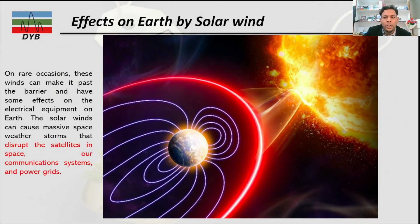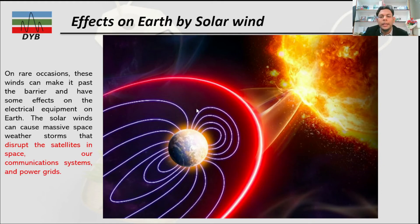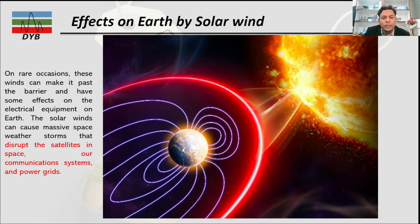Now let's look at the effect of solar wind on the Earth. The Earth also has a magnetic field, but it can be affected by the high-intensity magnetic field of the Sun, which is double that of Earth. During periods of large solar activity, high magnetic storms can reach the region of the Earth and affect electrical equipment. These solar winds can cause massive space weather storms that disturb satellites in space, our communication systems, and power grids on Earth.